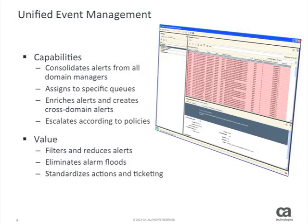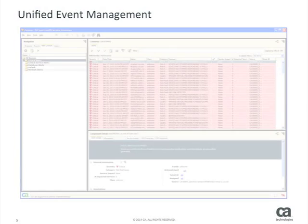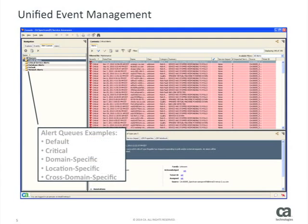Each queue can be assigned a specific escalation policy or action to create standard processes in operation. Alerts from all domains can be viewed in a single console, in specific, policy-based queues for proficient handling and escalation. You can customize and assign alerts to queues according to impact and other organizational or operational perspectives, such as class, severity, location, or assignment.